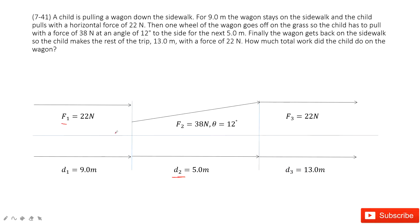Now we need to find the total work. The total work should be W1 plus W2 plus W3. So W1 is F1 D1 cosine 0 degree plus F2 D2 cosine theta 12 degree plus F3 D3 cosine theta 0 degree.